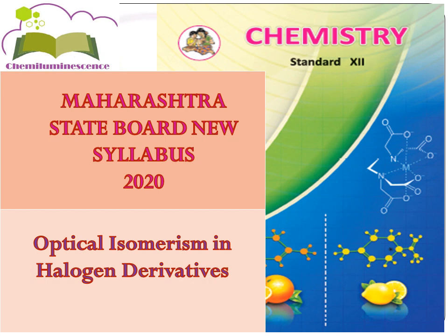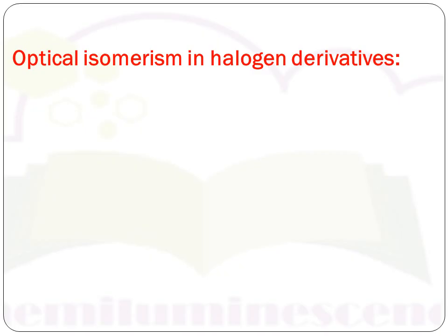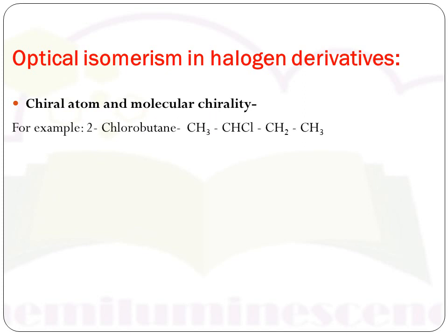Today's topic is optical isomerism in halogen derivatives. First, we'll see chiral atom and molecular chirality. Let's see with the help of an example — the example is 2-chlorobutane. We'll look at the open structure formula of 2-chlorobutane.